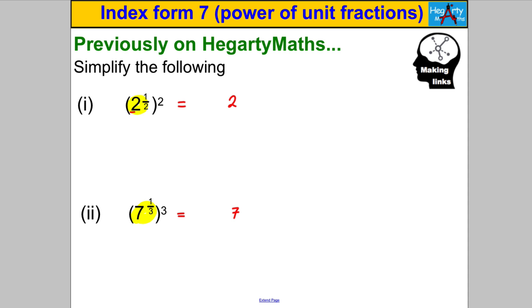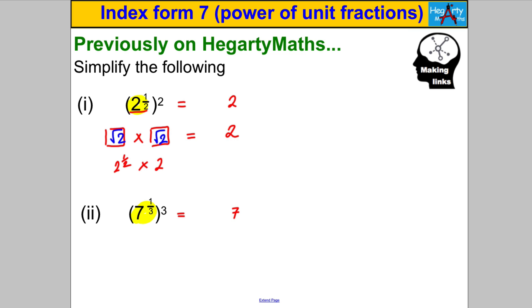Now let's think about what they must mean. Two to the half is something — we don't know what it is — but when you square it you get two. So: something, when you square it, gives two. What must that something be? It must be the square root of two, because the only thing that multiplies by itself to give two is the square root of two. So two to the half, multiplied by two to the half, must mean the square root of two.